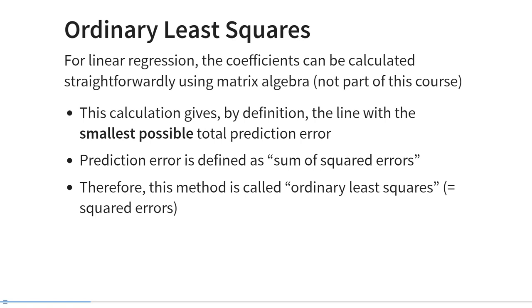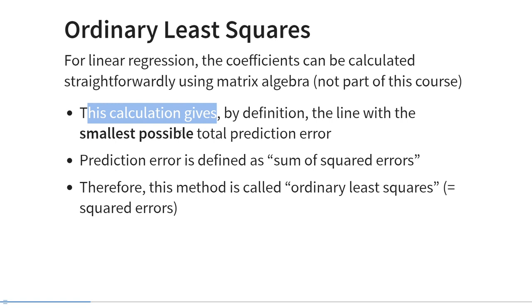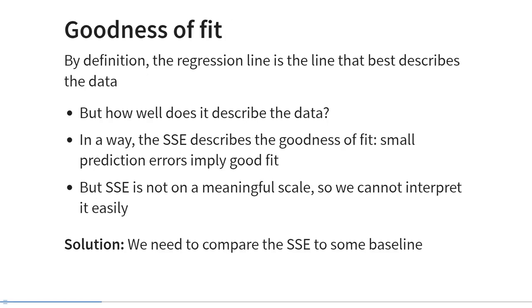As I explained previously, bivariate linear regression is estimated using the ordinary least squares method. That is simply a matrix algebra procedure, which is very straightforward but not part of this course. This calculation gives us by definition the line with the smallest possible total squared prediction error. That's where the name ordinary least squares comes from — least squares means the smallest sum of squared errors. So by definition, the regression line is the line that best describes the data.